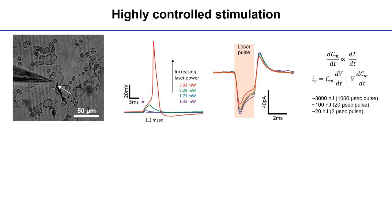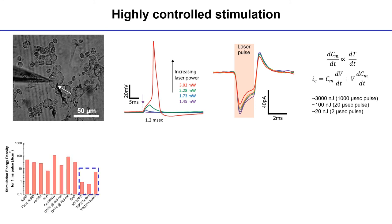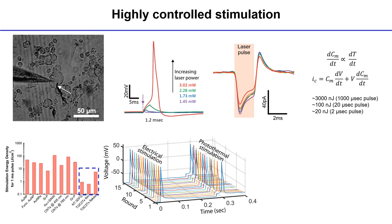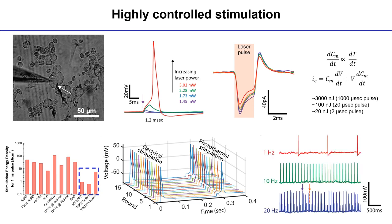As proof of this mechanism, we held the membrane potential at negative 150 millivolts and shone the laser, revealing transient currents. Comparing NT3DFG and MXene, the energy needed to elicit an effect is much lower than other materials currently in use. We also demonstrated highly reproducible stimulation with 15 consecutive pulses using both electrical stimulation and photothermal stimulation as ground truth, and we can drive a neuron at 1 Hz, 10 Hz, and 20 Hz.